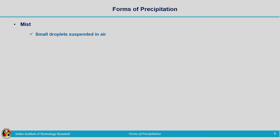Next is mist. Mist is small droplets suspended in air. Fog is the same as mist but with visibility less than 1 kilometer. During foggy days when we drive we are not able to see a longer distance. If the visibility distance is less than 1 kilometer then we call it fog. So mist and fog can be considered to be the same.